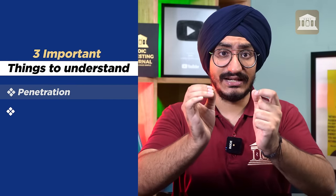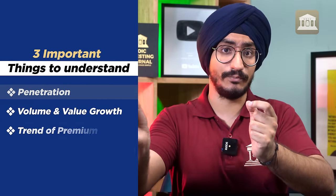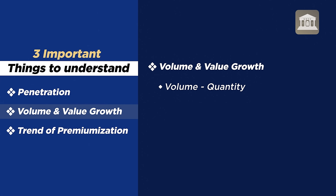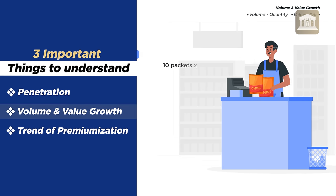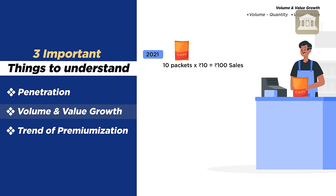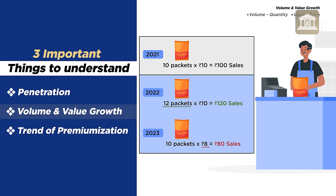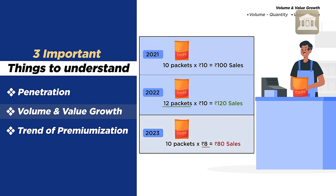The second and third most important aspects are volume and value growth, and the trend of premiumization. Volume is the quantity, and value is the price. Suppose you have a store selling 10 packets of chips for 10 rupees each — you sell 100 rupees worth. Next year, if you sell 12 packets at 10 rupees, you sell 120 rupees. But if you sell 10 packets at 8 rupees, your value is 80 rupees. So you need to understand quantity-led growth versus pricing-led growth.